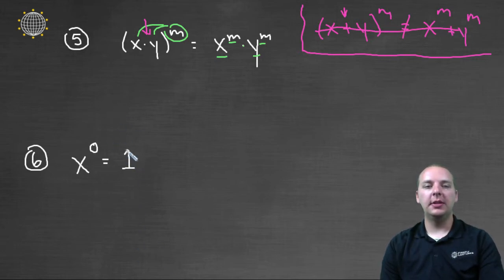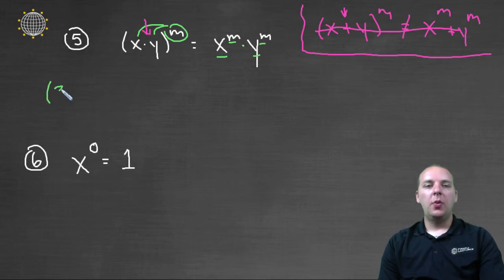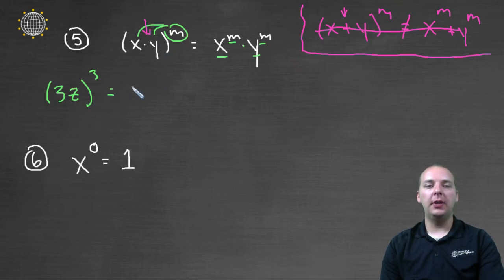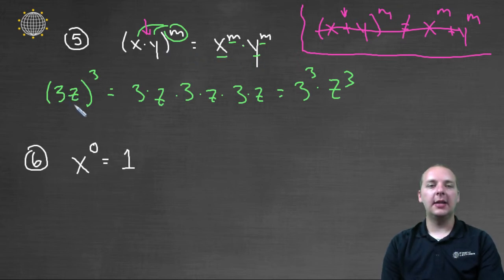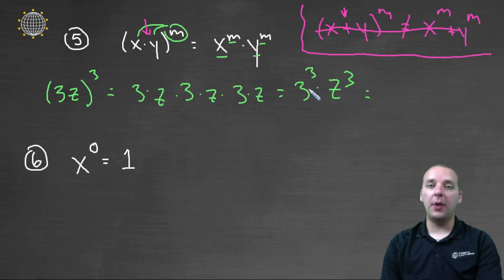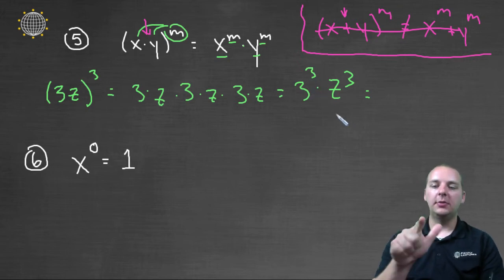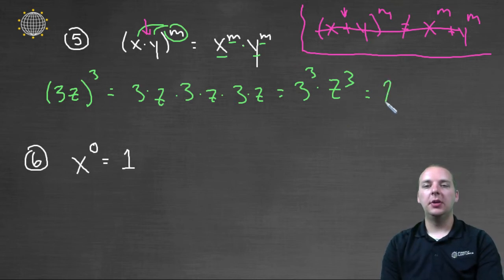Let's try an example. Let's say we had the quantity three z to the third power. If we didn't know this property, we'd have to take three z times three z times three z. But if you reorder all the terms, you'd get three to the third times z to the third — that's this property: x times y to the m equals x to the m times y to the m. Any time you have a numerical value raised to a power, go ahead and figure out what that is. Three times three is nine, nine times three makes twenty-seven. So we get twenty-seven z to the third.